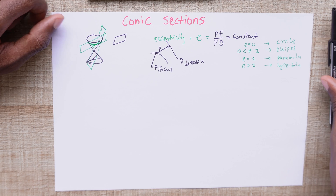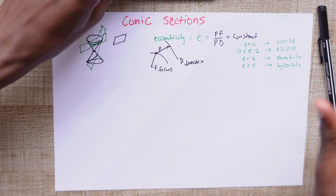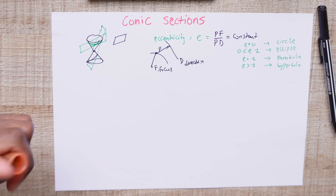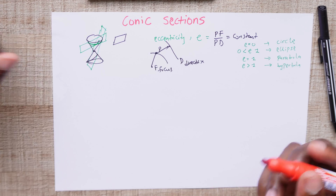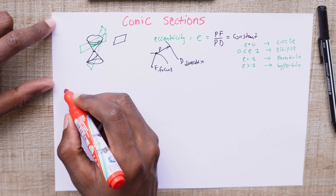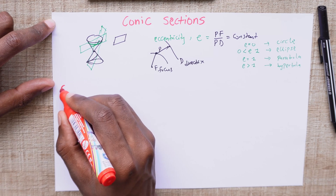So knowing the eccentricity of a conic section, we can infer which type of conic it is — whether it's a circle, an ellipse, a parabola, or a hyperbola. Let's start with the first conic section, which is the circle.